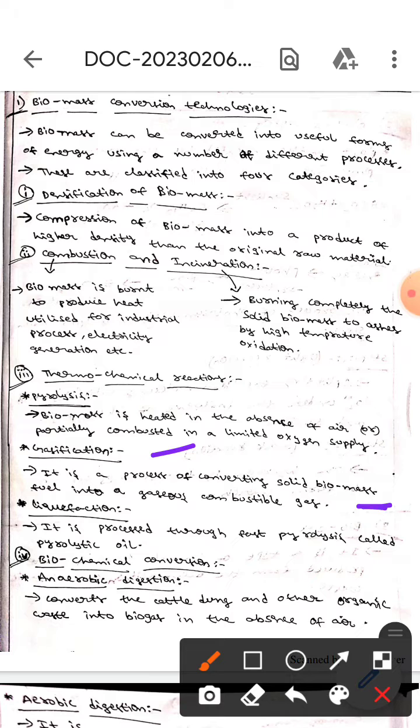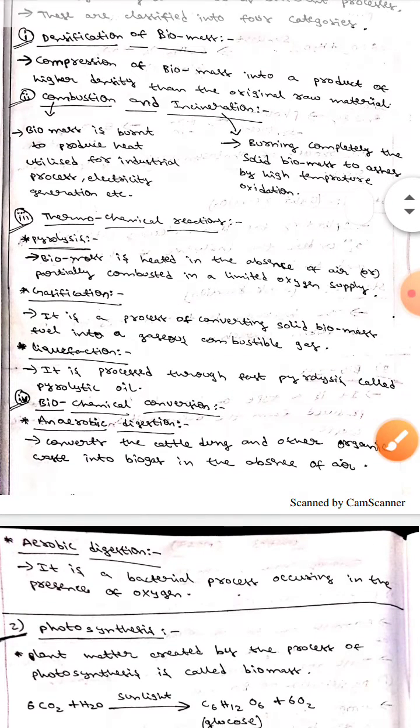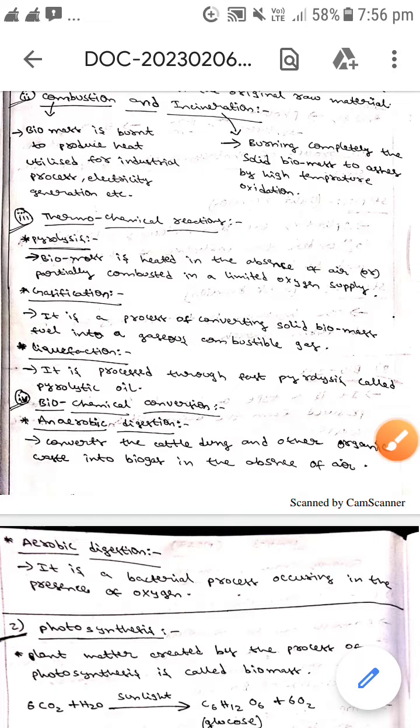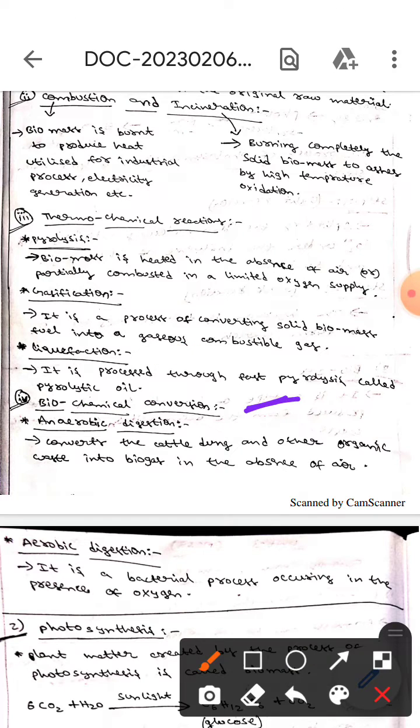Whereas the next one is gasification - it is a process of converting solid biomass fuel into gaseous combustible gas. Whereas the next one is liquefaction - it is a process through fast pyrolysis which is called pyrolytic oil.